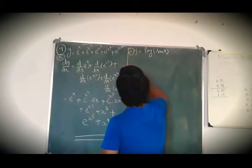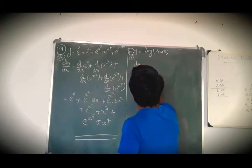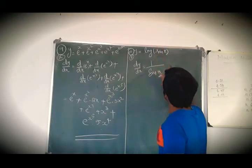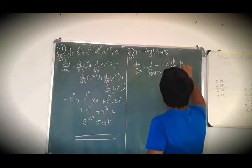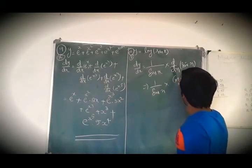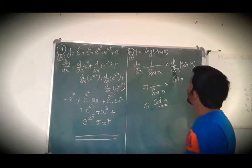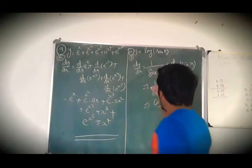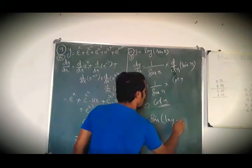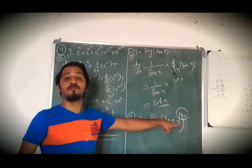Tenth question: y = log(sin x). Derivative of log x is 1/x. So dy/dx = 1/sin x · derivative of sin x. Derivative of sin x is cos x. So dy/dx = cos x / sin x = cot x. Therefore, derivative of log(sin x) is cot x. Can you try this problem? y = sin(log x) — hold on, next episode I will do that. Try this: sin(log x).